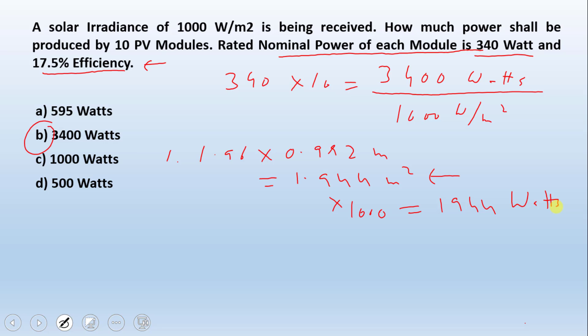Now how much of that is converted into power by the module is given by the efficiency factor. So we will multiply this with 17.5% and that comes out to be 340 watts. So that's the original number given in the question.